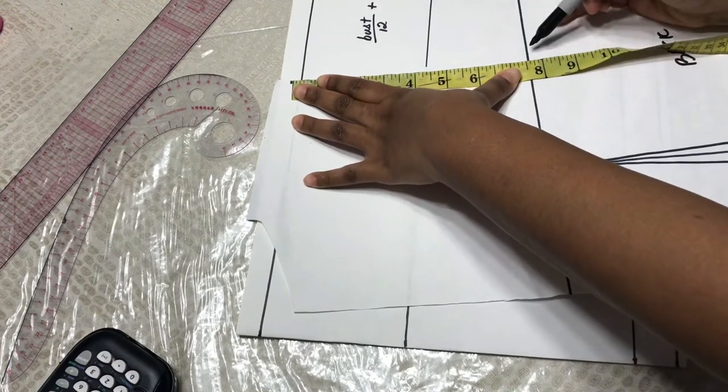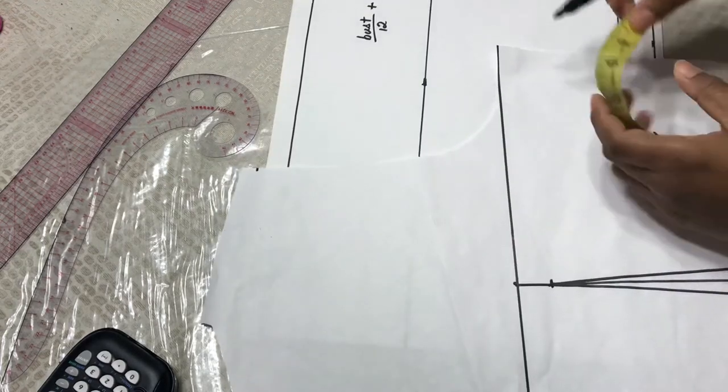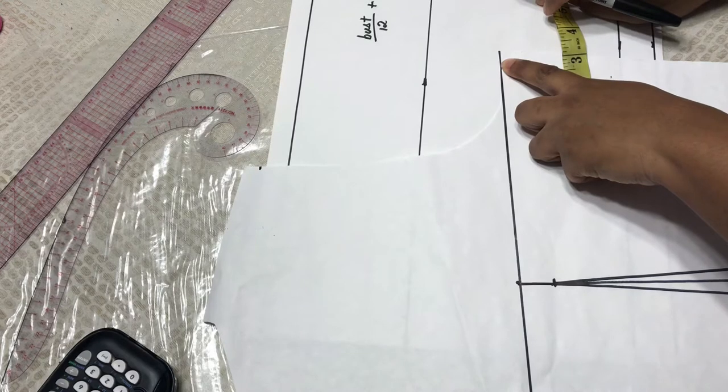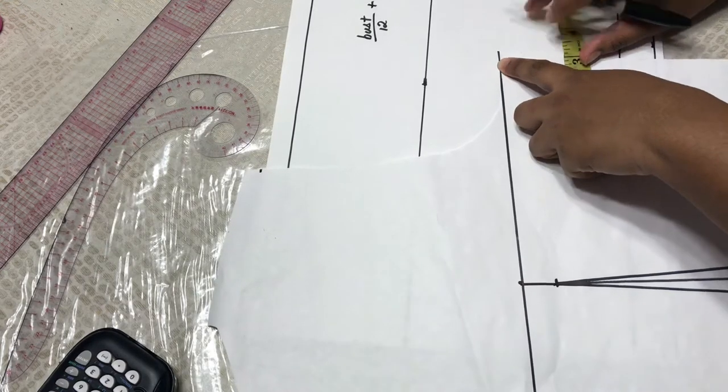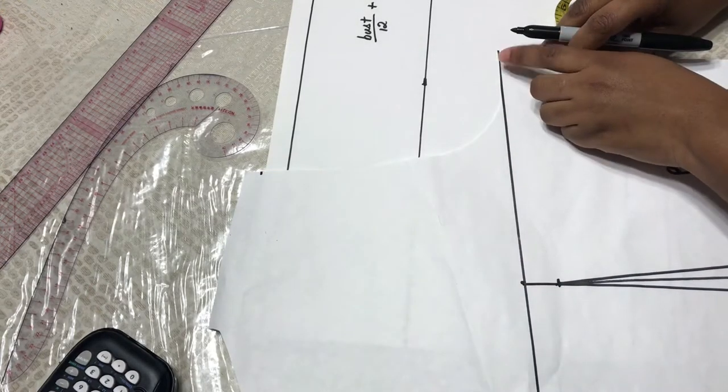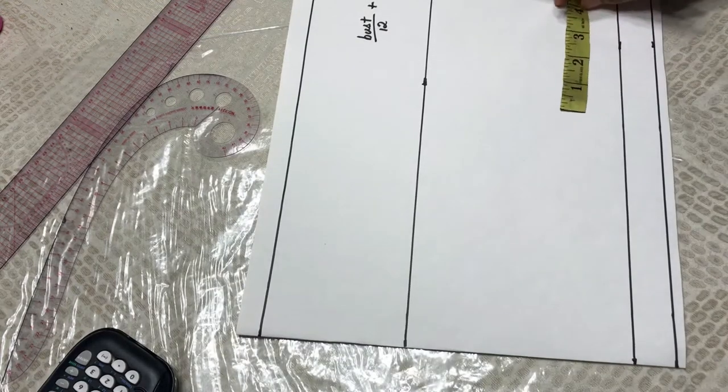Mine is 7.5, and as you might remember, I have added a half inch seam allowance here, so you also have to take in consideration the seam allowance that you have put on your pattern. So this is 7.5 plus my half an inch that I made here, so that's 8.